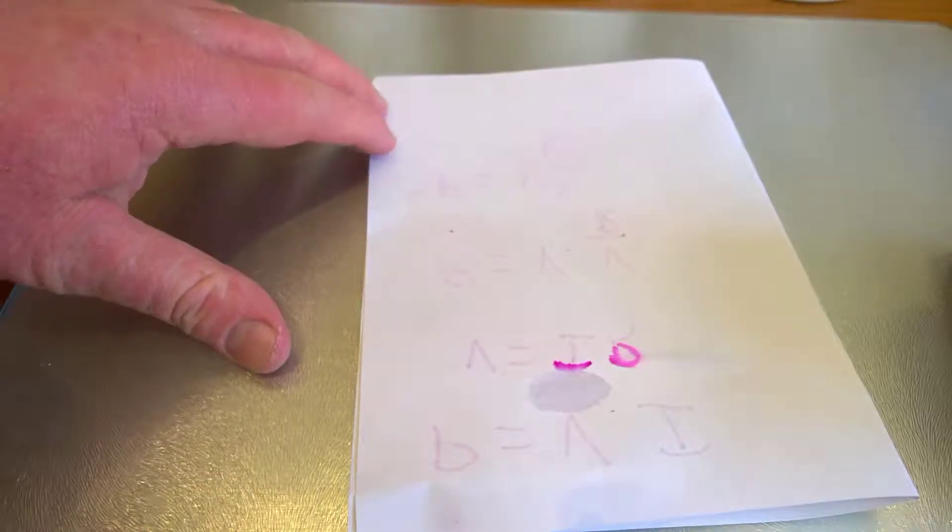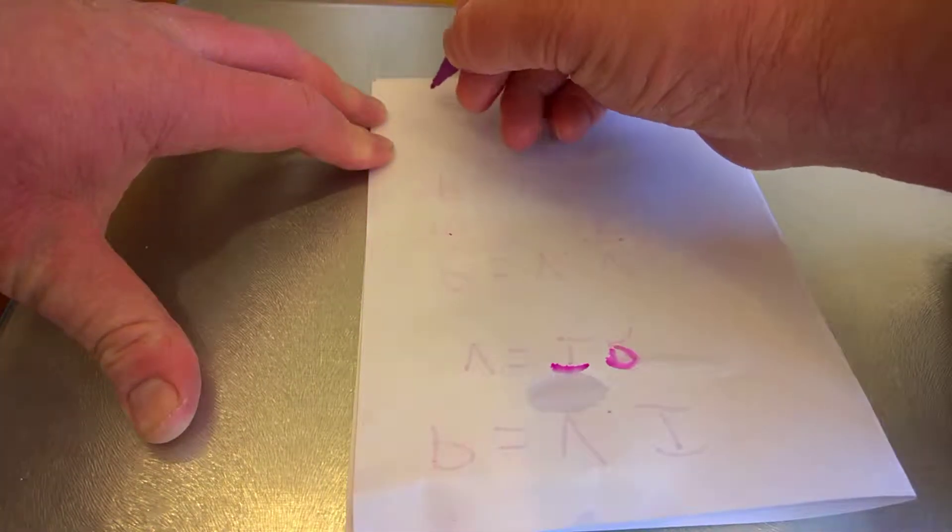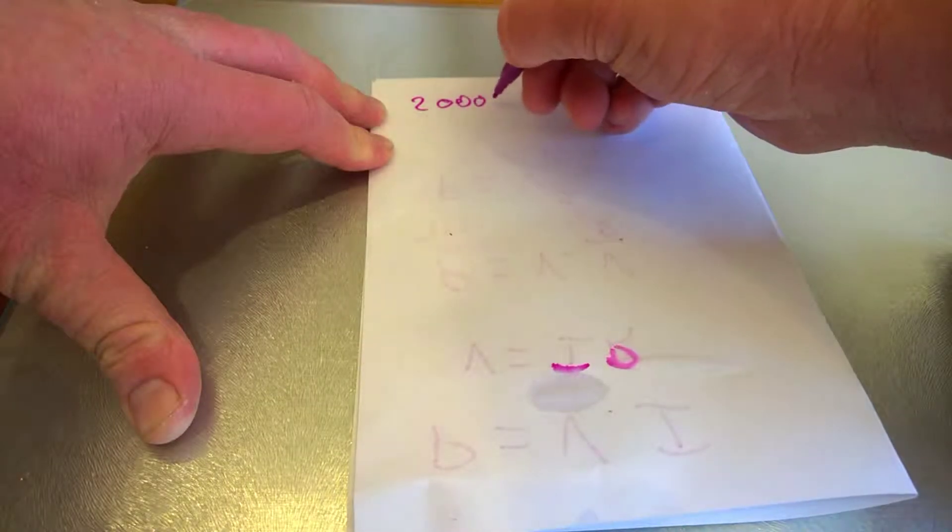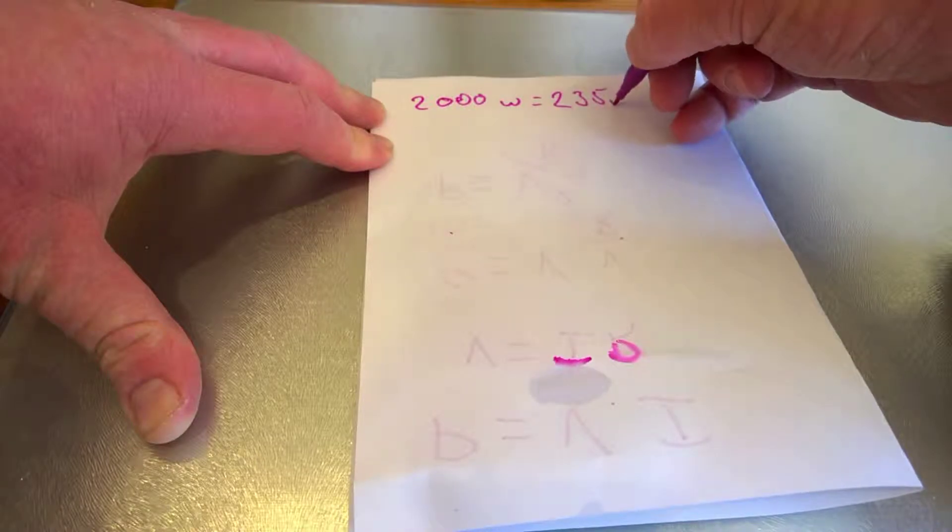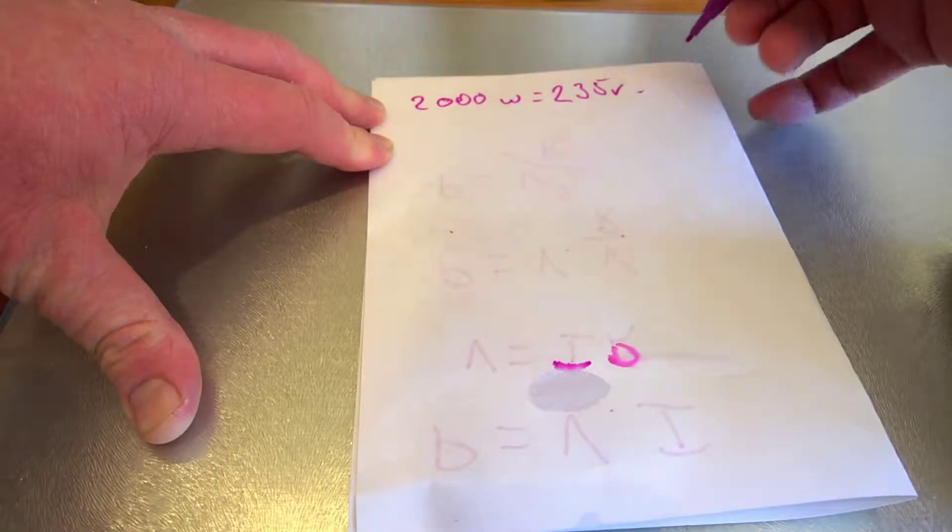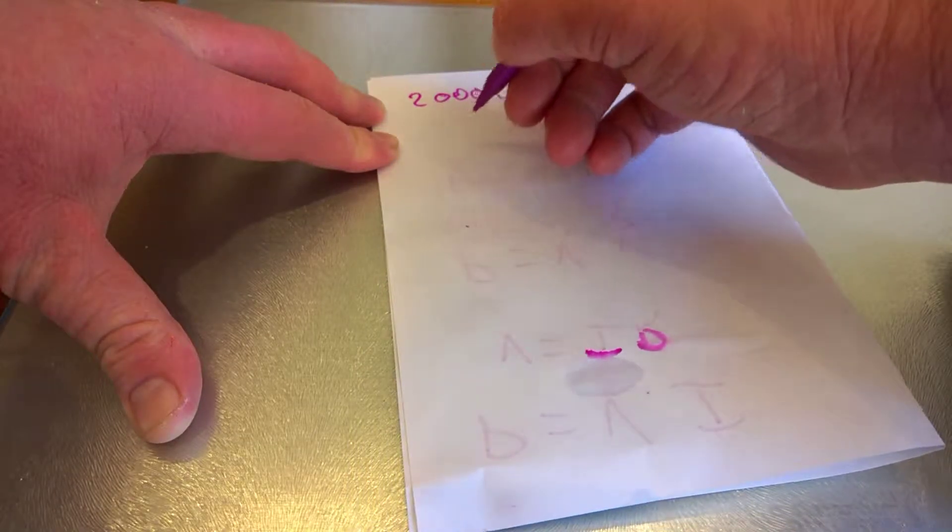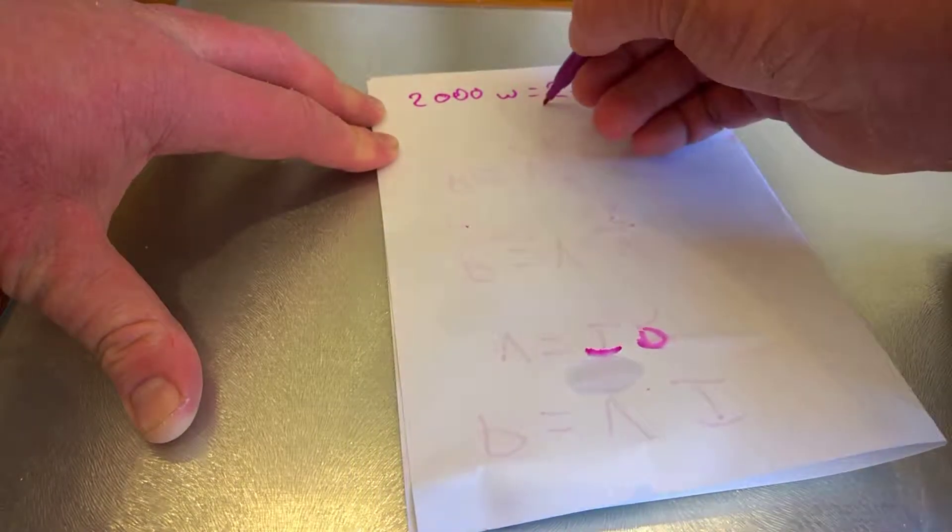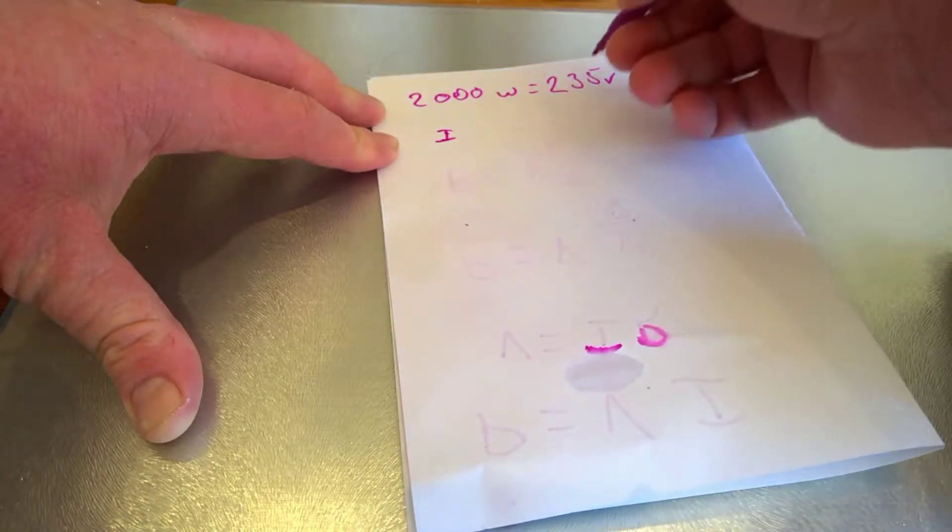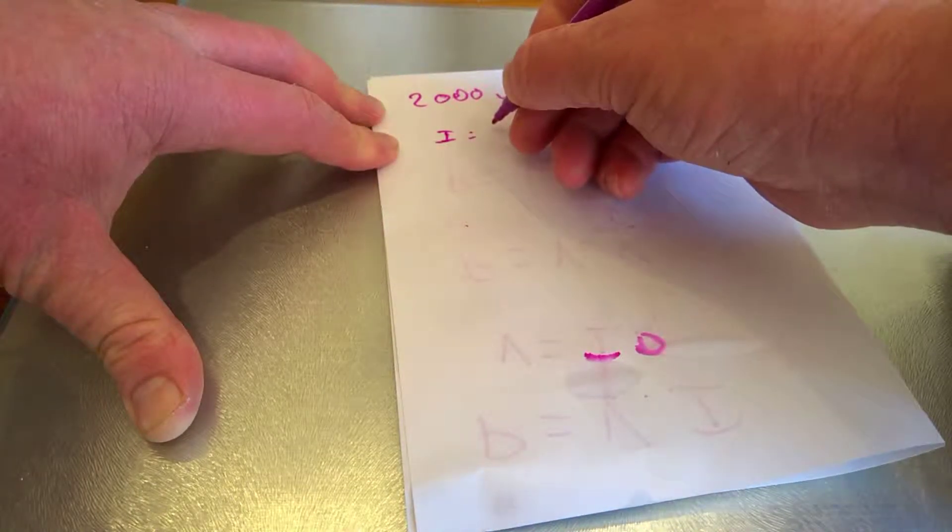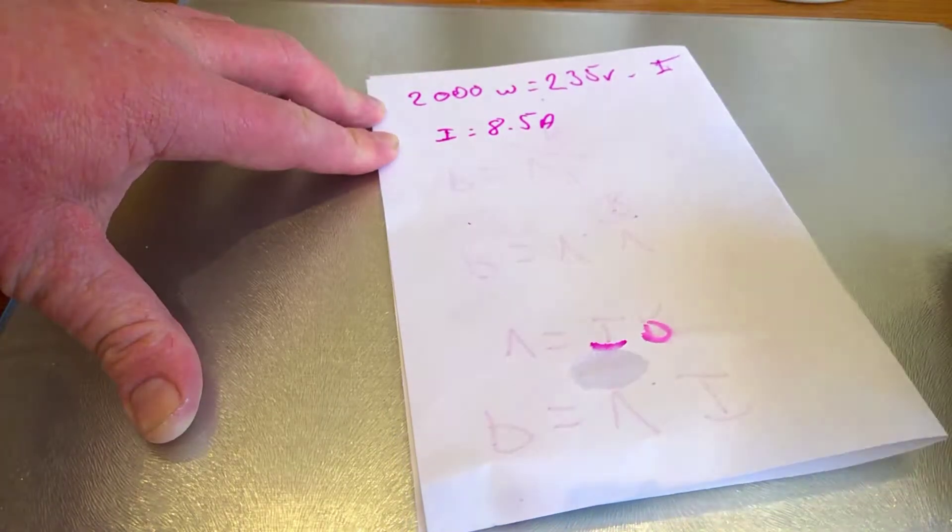So, super quickly, the Panini Grill was around 2,000 watts, and we were at 235 volts, and not too sure what the current was. So we could divide this. So current at 235 was about 8.5 amps, or thereabouts.